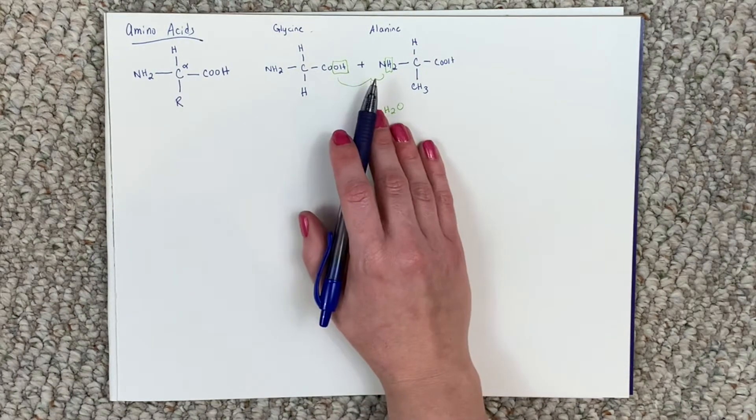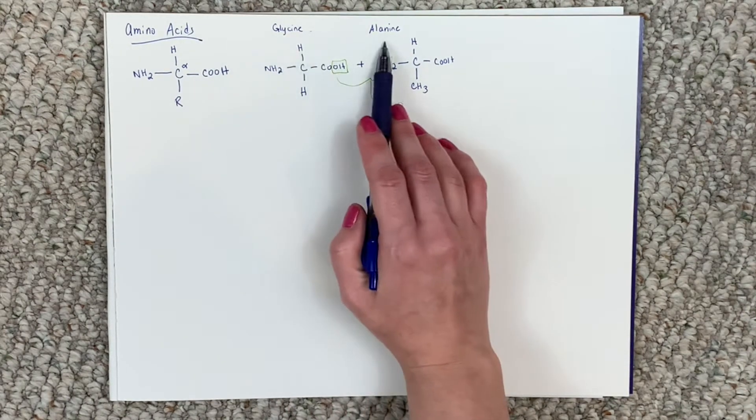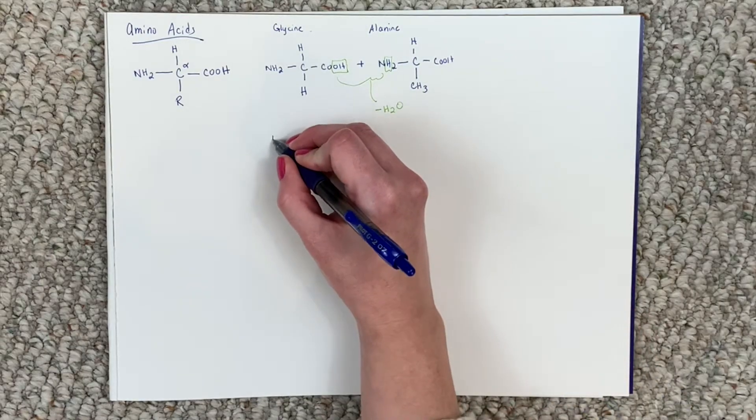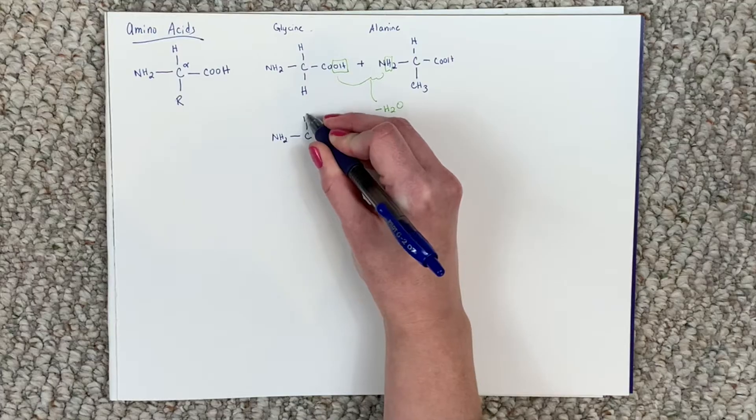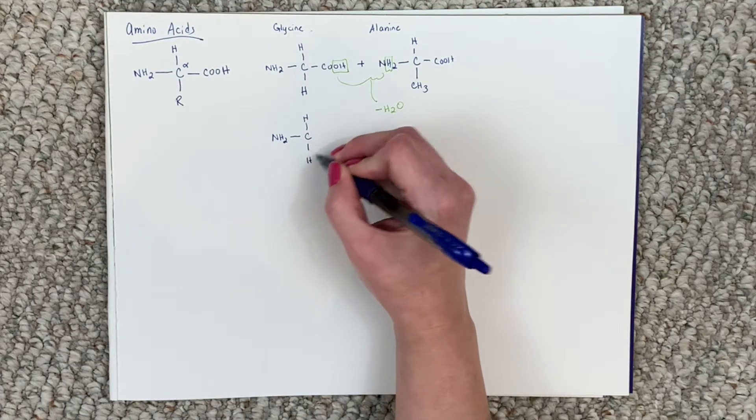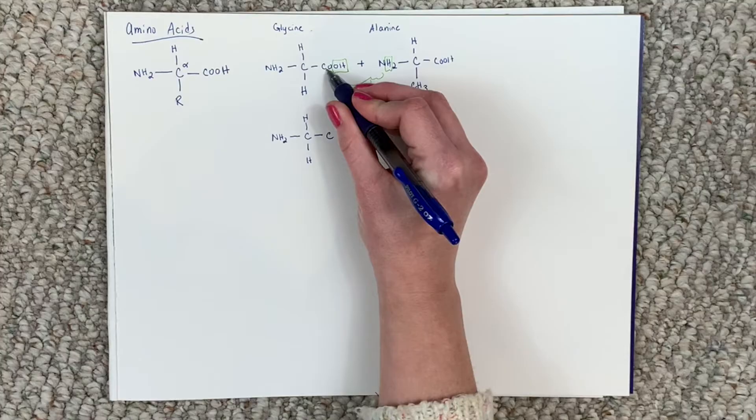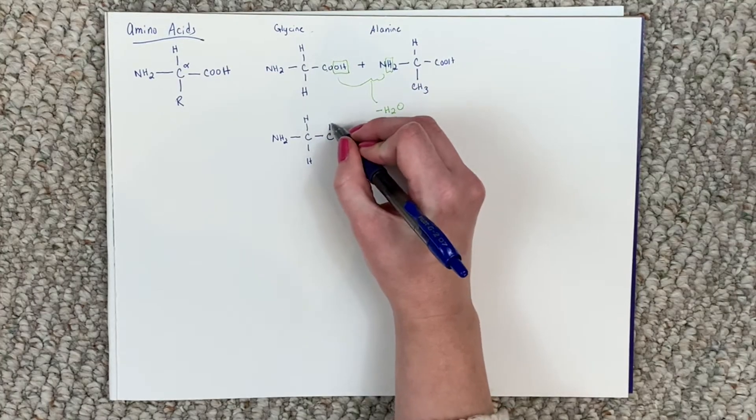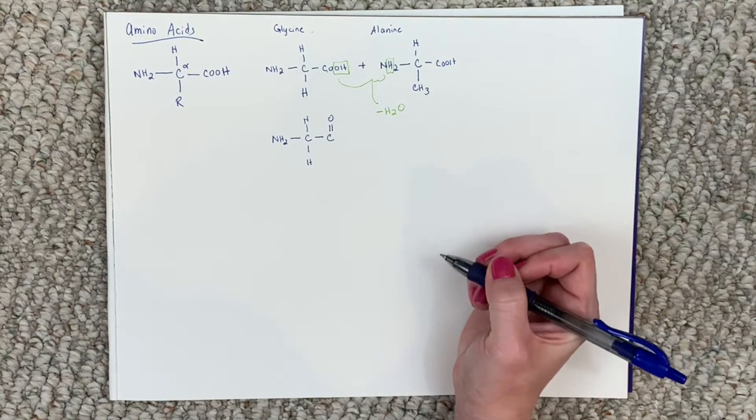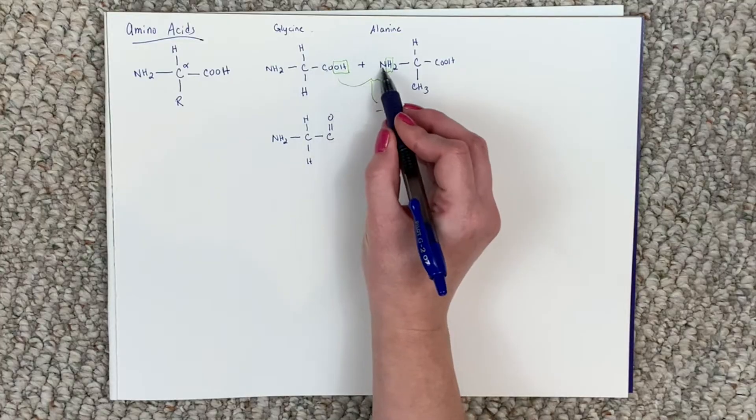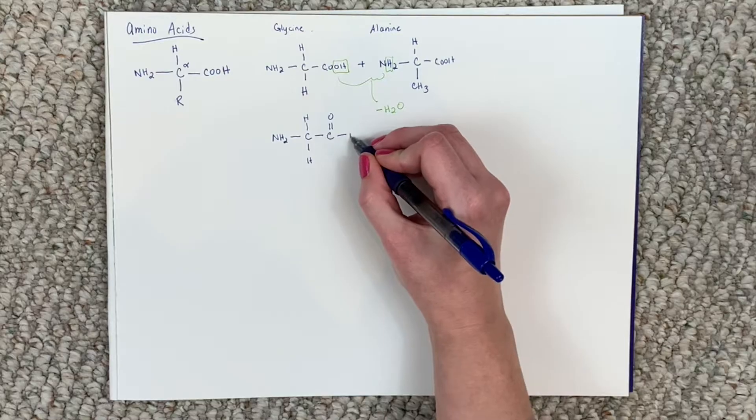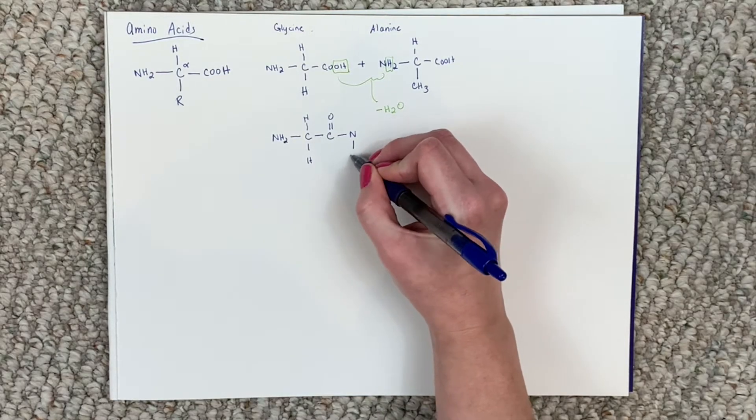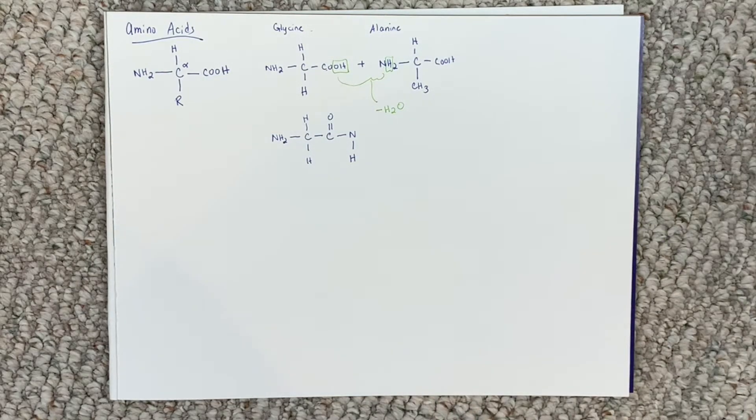So let's now draw the dipeptide of glycine and alanine. So we start with NH2 of glycine to the alpha carbon, and none of this has changed. So we go to this carbon, this carbon right here. It's double bonded to an oxygen, but here's where we attach it to the nitrogen of the second amino acid, right? So N, it has one hydrogen, it lost a hydrogen, but still has one other hydrogen.